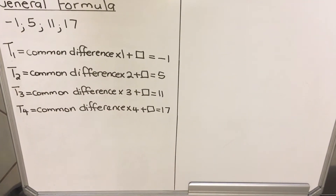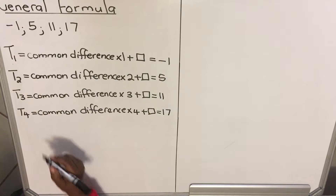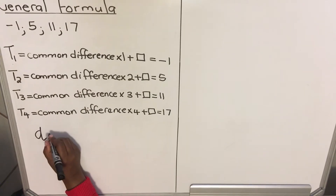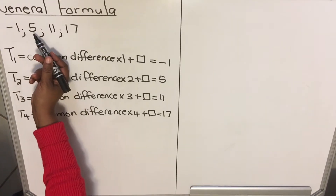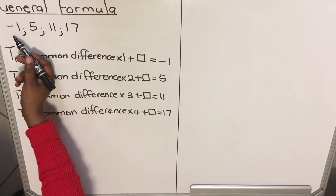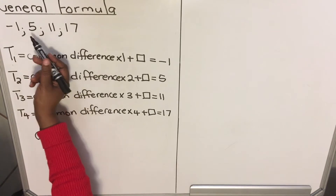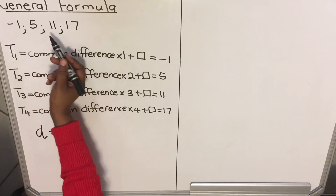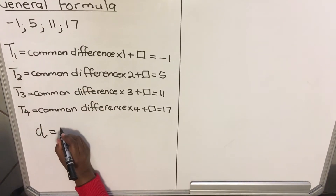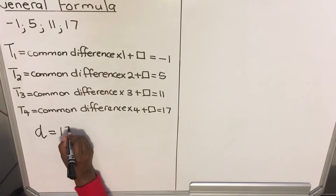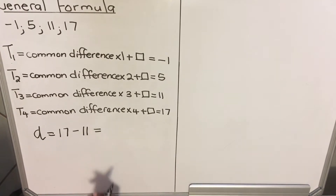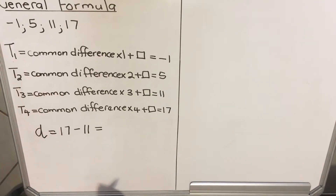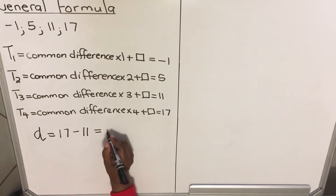Let me show you how to find the common difference. We write it as d. You always do: this term minus the previous term. So start with 17 minus 11, and you get 6.